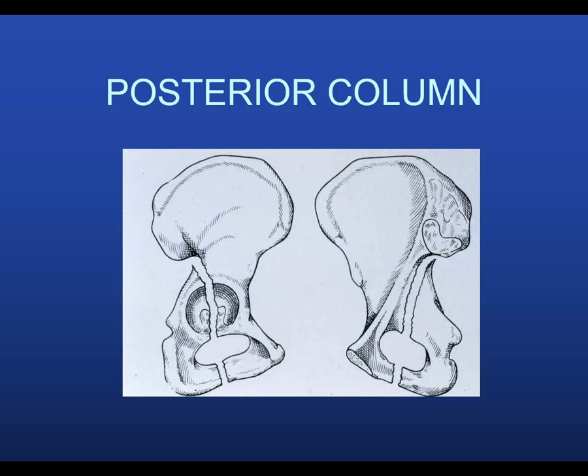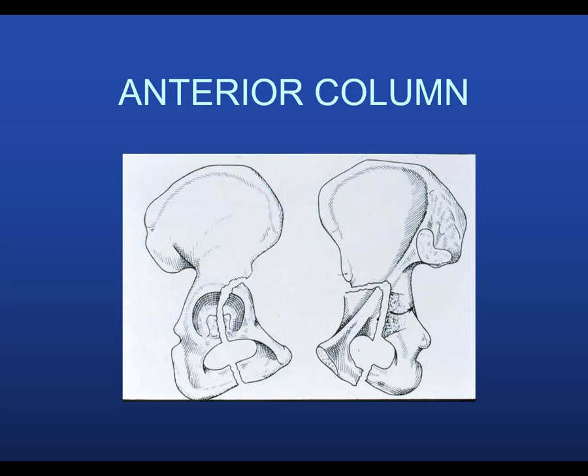Posterior column fracture — a true posterior column fracture is actually kind of uncommon. A lot of times we see posterior wall fractures with extended fragments that go out into the posterior column, but a real posterior column fracture that does not involve the anterior column at all and really no wall fracture is shown here. It's an uncommon fracture pattern.